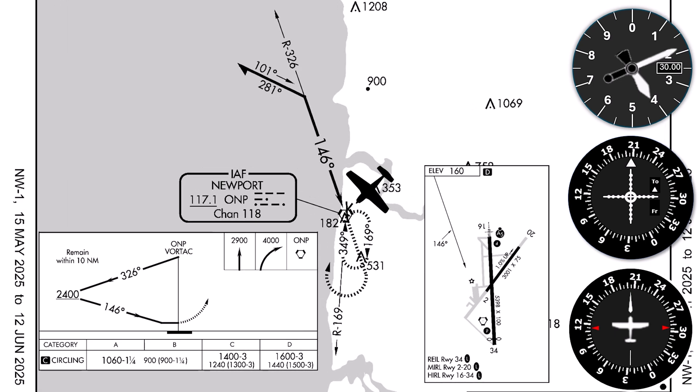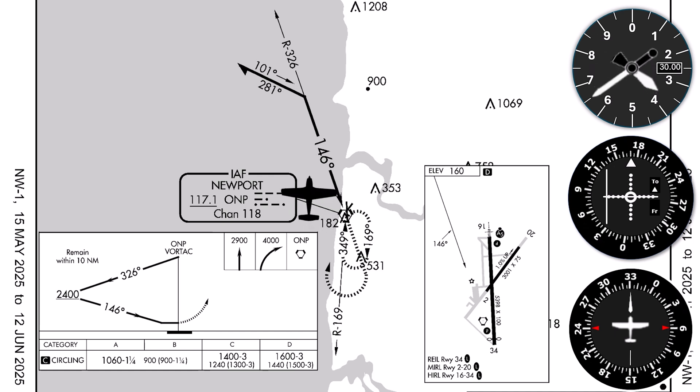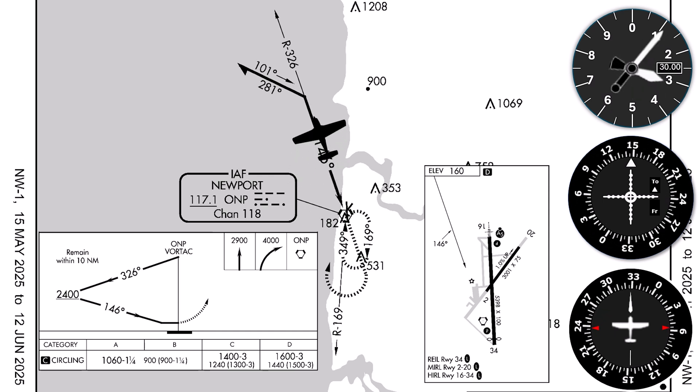What happens next is the procedure turn. We cross the station and the flag flips. We're going to turn to an intercept course of about 360. We'll begin timing our outbound leg, planning to stay within 10 miles of the VOR for the course reversal, as it says in the profile view. We're twisting the OBS to set the inbound course for the approach of 146. Because we're flying the reciprocal of 146 going outbound, the needle will be reverse sensing — notice it's left of center even though we need to correct to the right. If you don't want that, you could twist the OBS to 326, what you're actually flying, but just know that you'd have to set 146 once you turn back inbound.